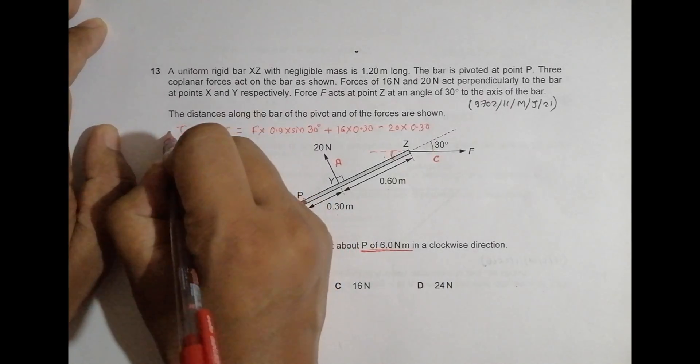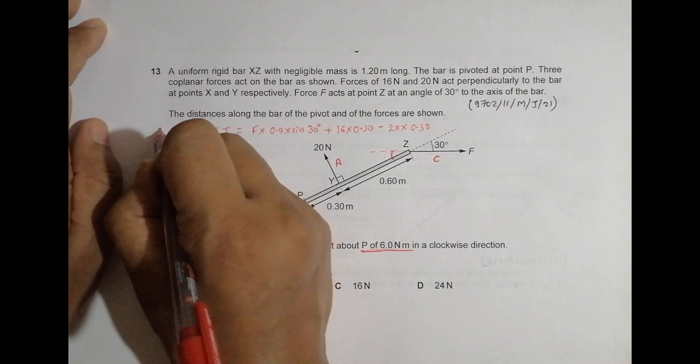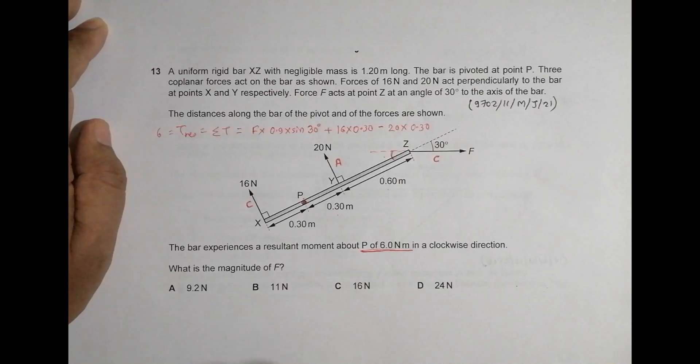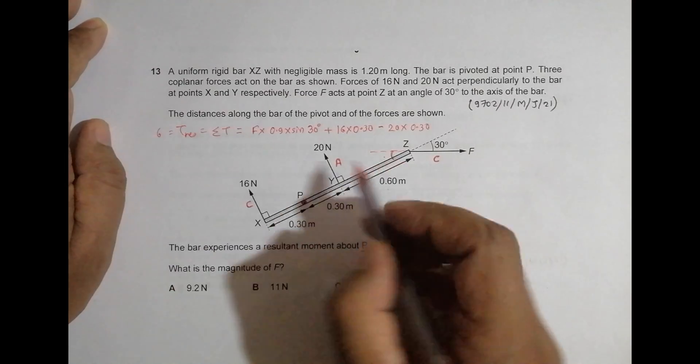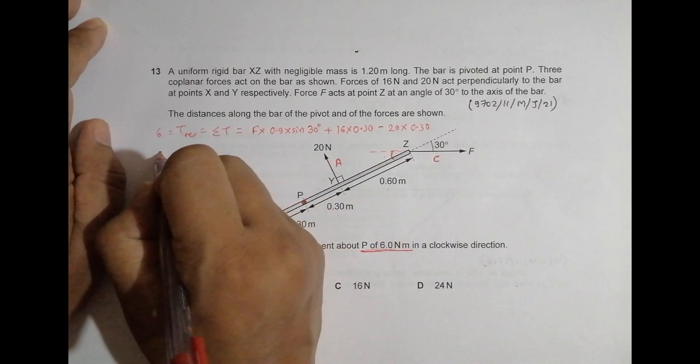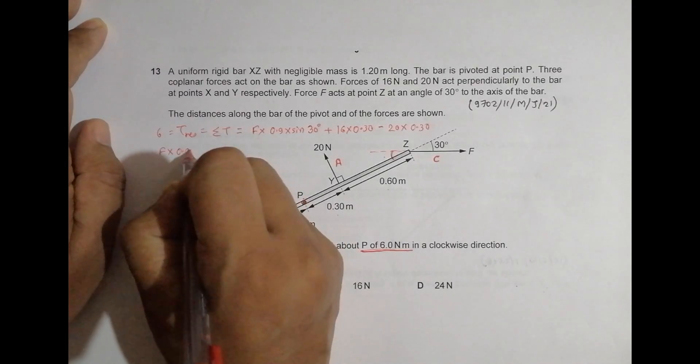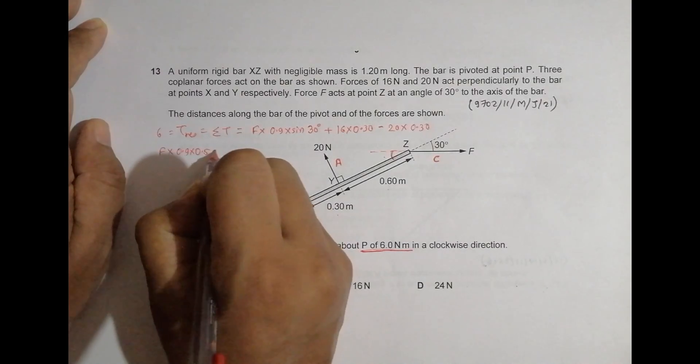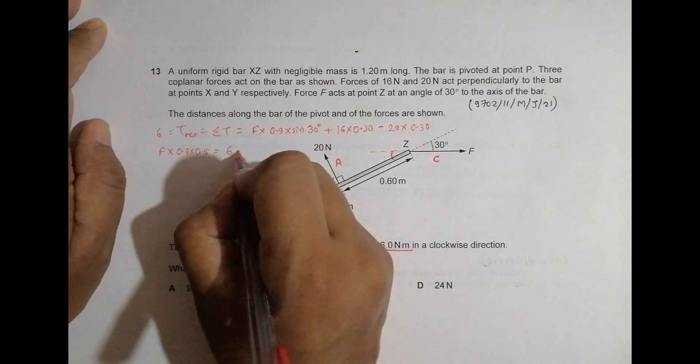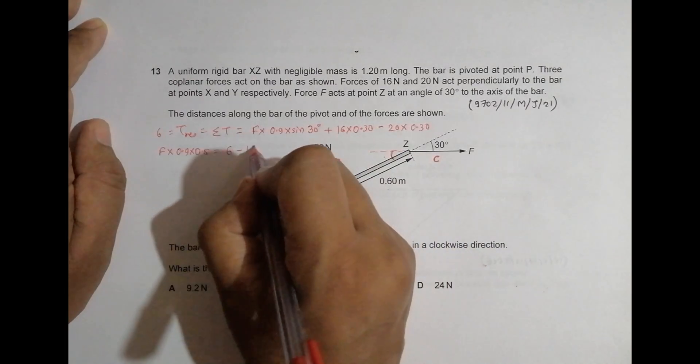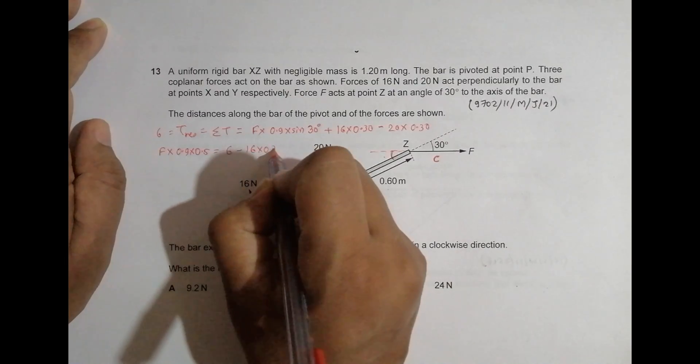So this is the equation and this T resultant is equal to 6.0, so the overall value should be equal to, so first let us do like this: F into 0.9 into 0.5 should be equal to 6 minus this 16 into 0.30.